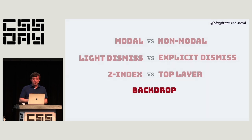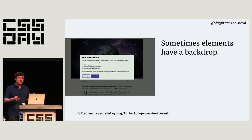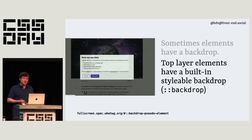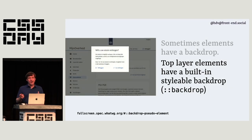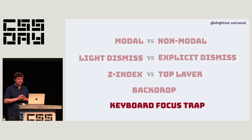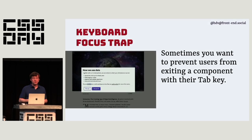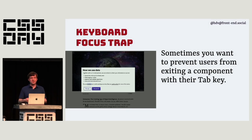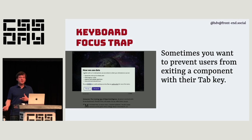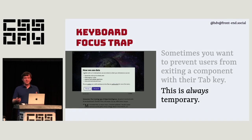Some elements may have backdrops. That often makes sense in modal overlays to show the user they can't interact with the rest of the page. Top layer elements have built-in stylable backdrops — with the ::backdrop pseudo-element in CSS, you can make it pink, add blur effects, and so on. Then there's the keyboard focus trap, which you want in modal overlays to prevent people from leaving that component with the Tab key. Note that always trapping keyboard focus violates the WCAG standard — it should always be temporary.